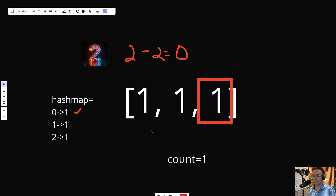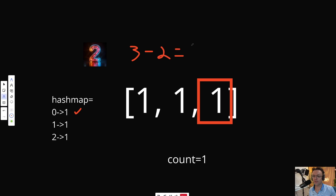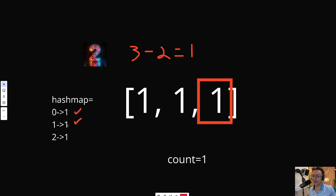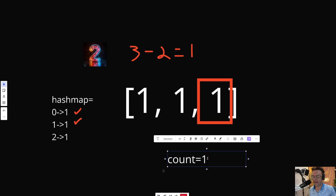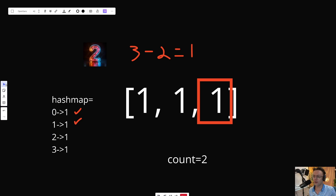We move on to the last number. The previous numbers add up to two, and when we add one, our prefix sum equals three. When we take three minus K, which is two, we get one. One is a match! So we pluck out that frequency, add it to our count, and then add our current sum — three occurring one time — to the hash map. The algorithm ends right here.